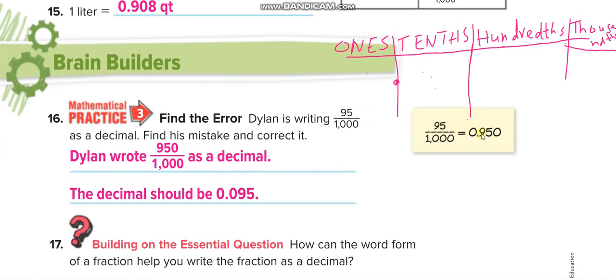They did a mistake here. You have to correct it. So Dylan wrote 95 over 1000 is equal to 0.950. No guys, it's 95 over 1000. This 5 will come at the thousandth place here, and then 9 will come at the hundredth place, and then we'll fill this one with zero, so it will be 0.095.